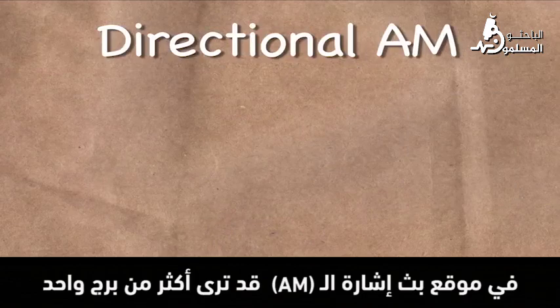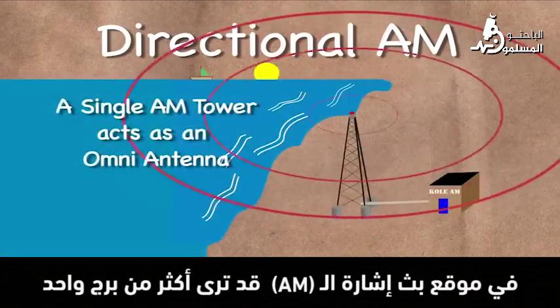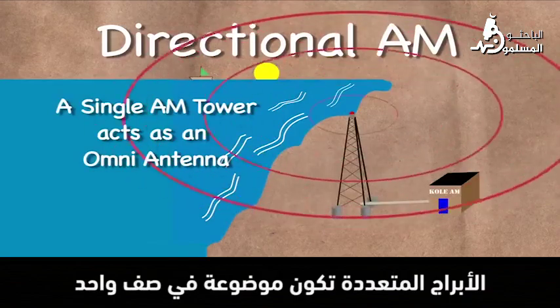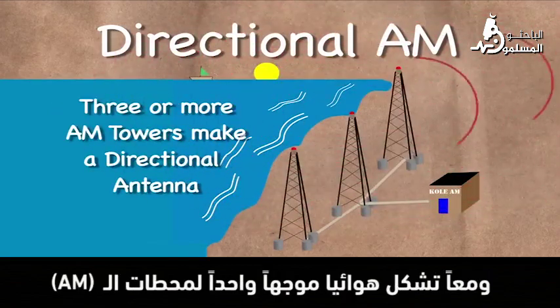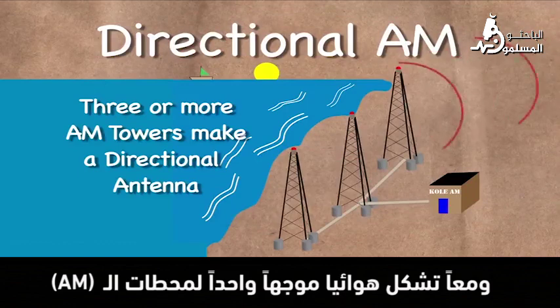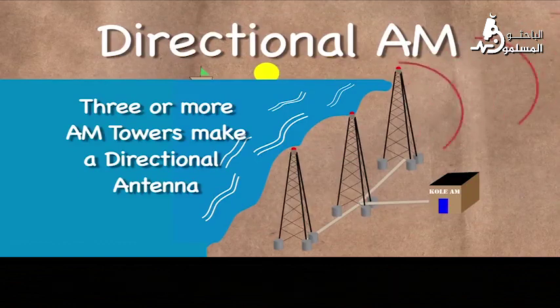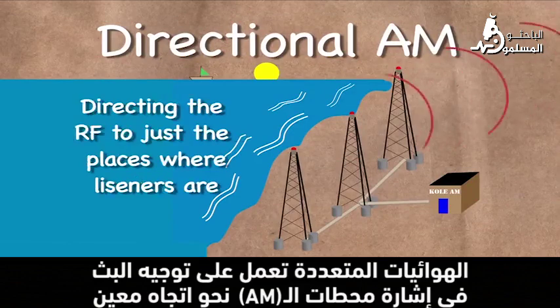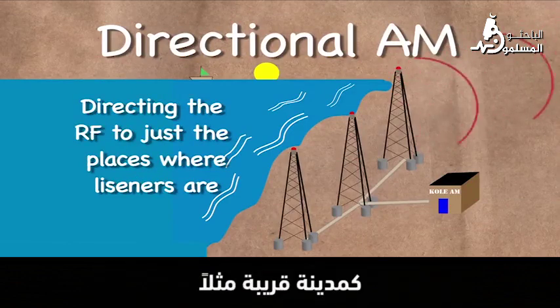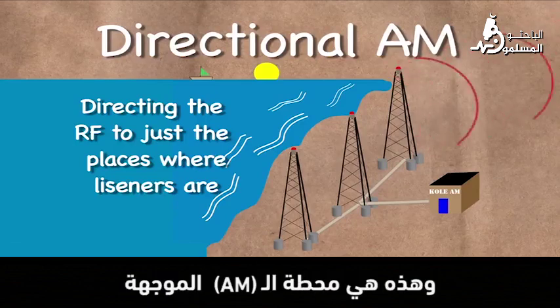At an AM radio transmitter site, you may see more than one tower. The multiple towers are lined up in a row, and together make up a single antenna for the AM station. The multiple antennas function to aim the transmission of the station's signal in a particular direction, such as towards the nearby city. This makes it a directional AM station.